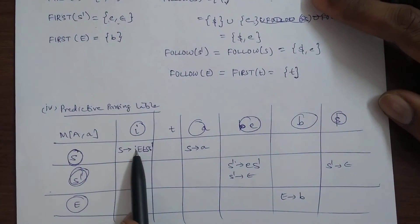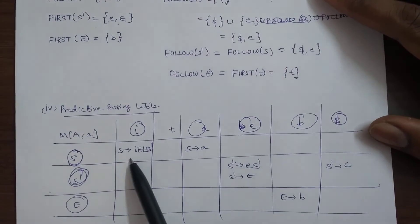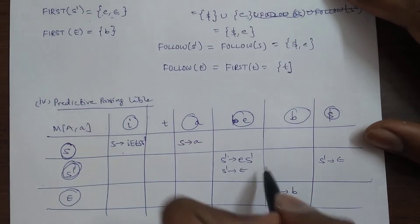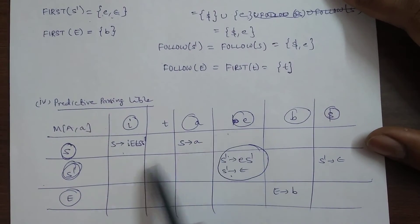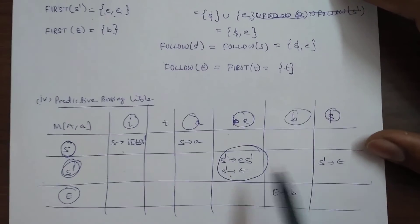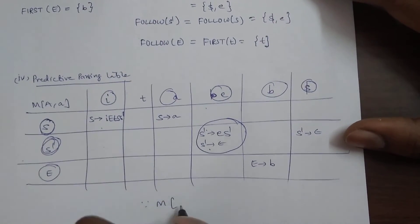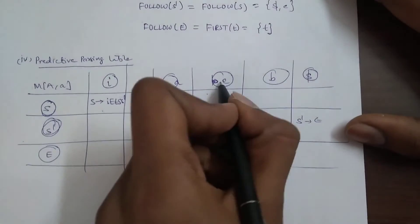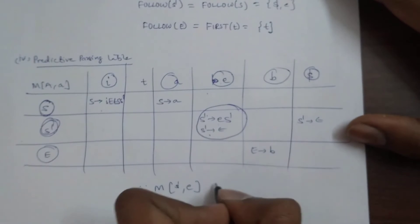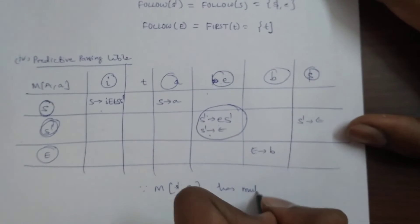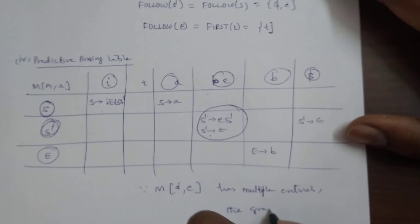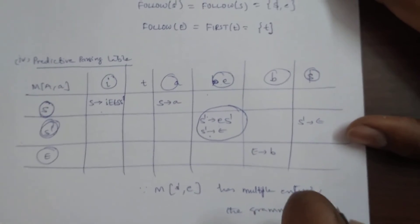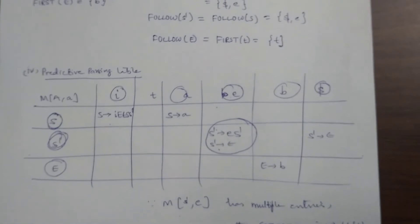The aim is to check whether the following grammar is LL(1) or not. For LL(1), each cell in the predictive parsing table must have at most one entry. But here, the cell for S' with terminal 'e' has two entries — multiple entries. Since there are multiple entries, the grammar is not LL(1). Therefore, we will do non-recursive predictive parsing.